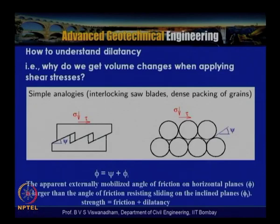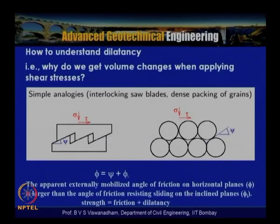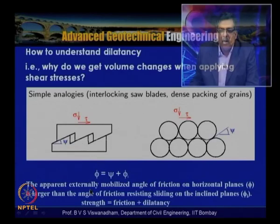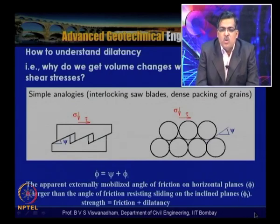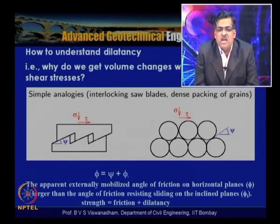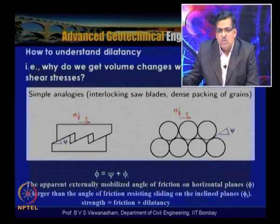The dilatancy phenomenon can be explained using the saw blade analogy. When shear is applied along a saw blade, movement takes place. The apparent externally mobilized angle of friction on horizontal planes (phi) is larger than the angle of friction resisting sliding (phi_u). In essence, strength equals friction plus dilatancy.